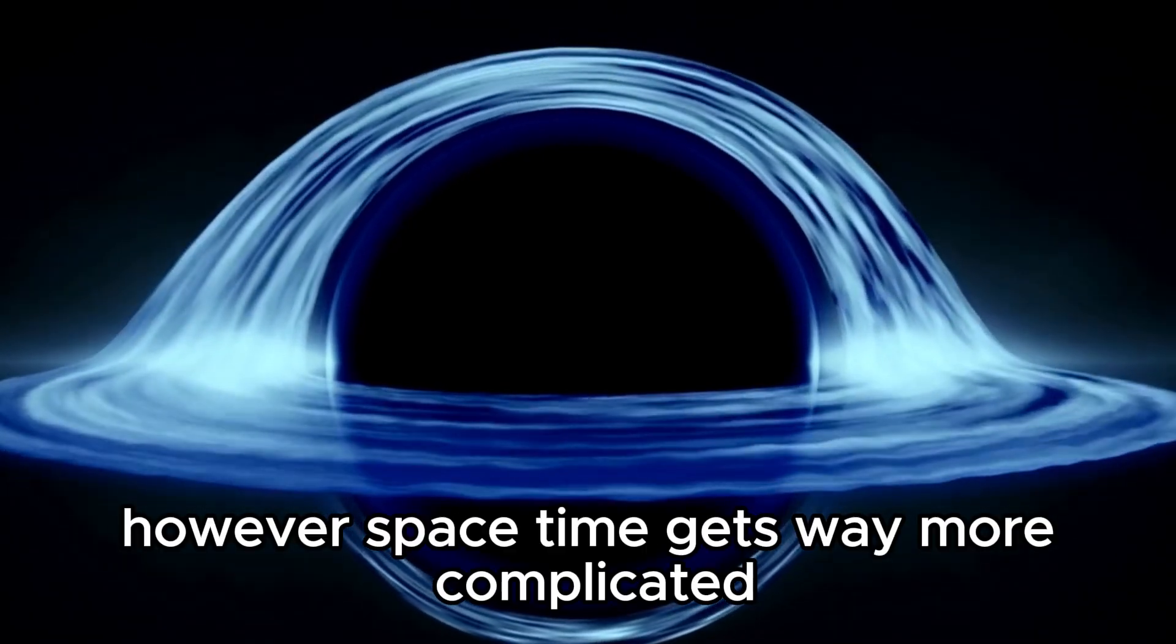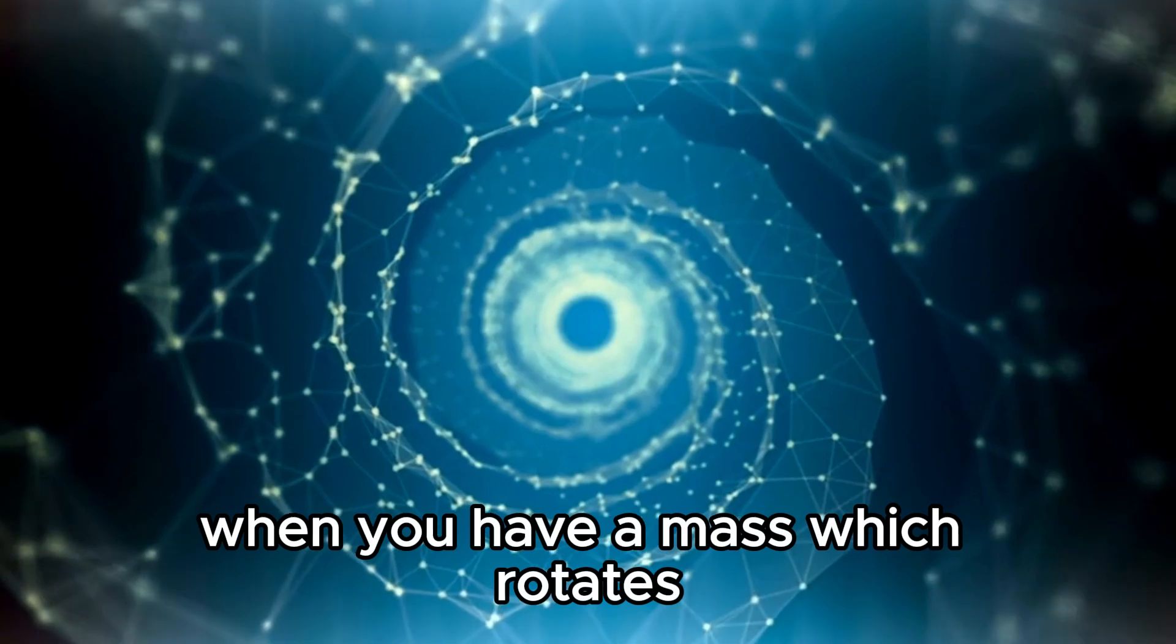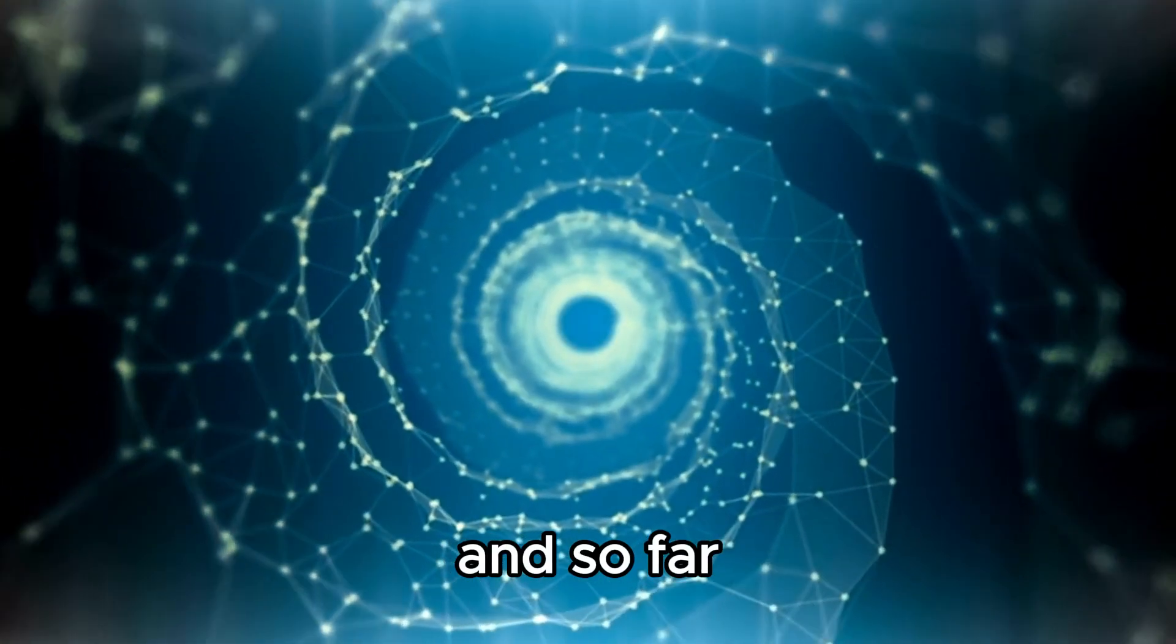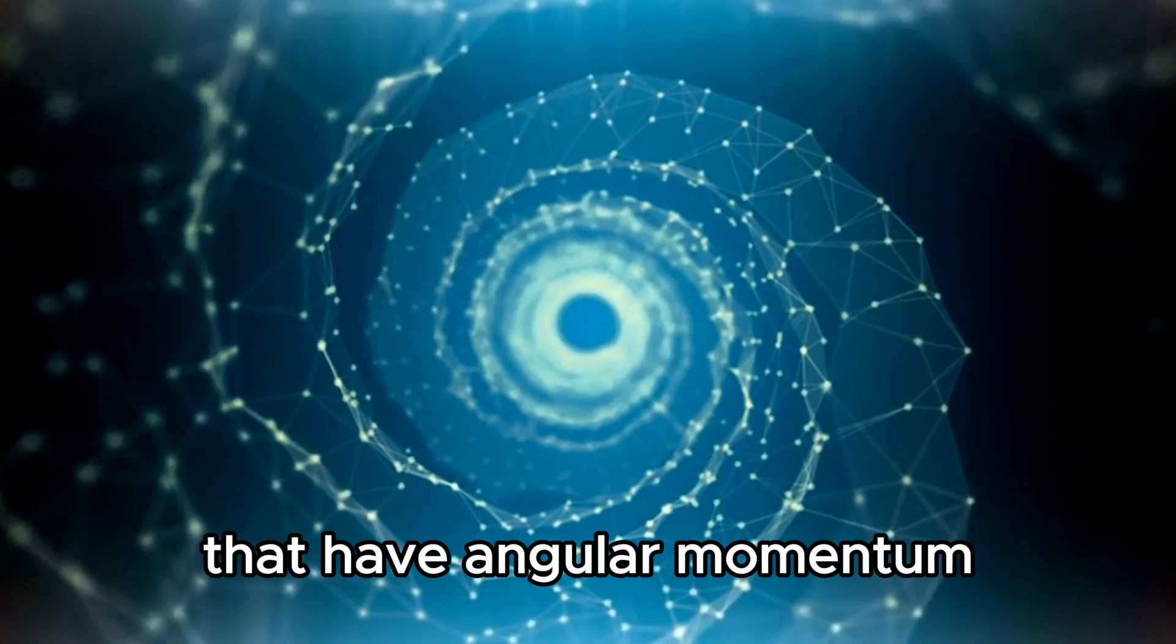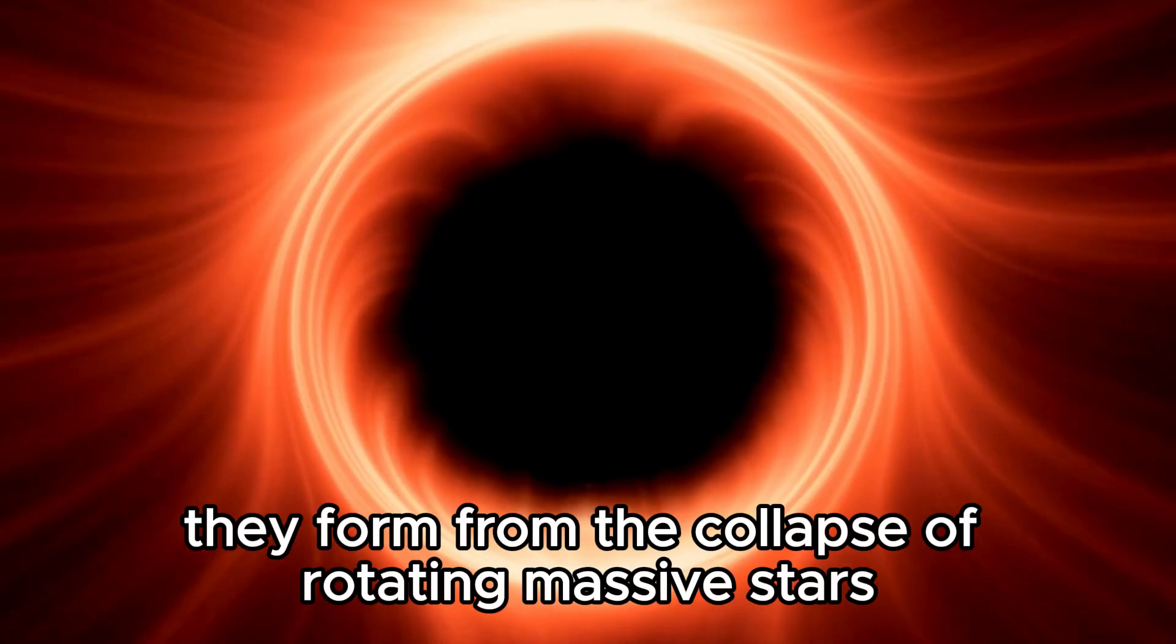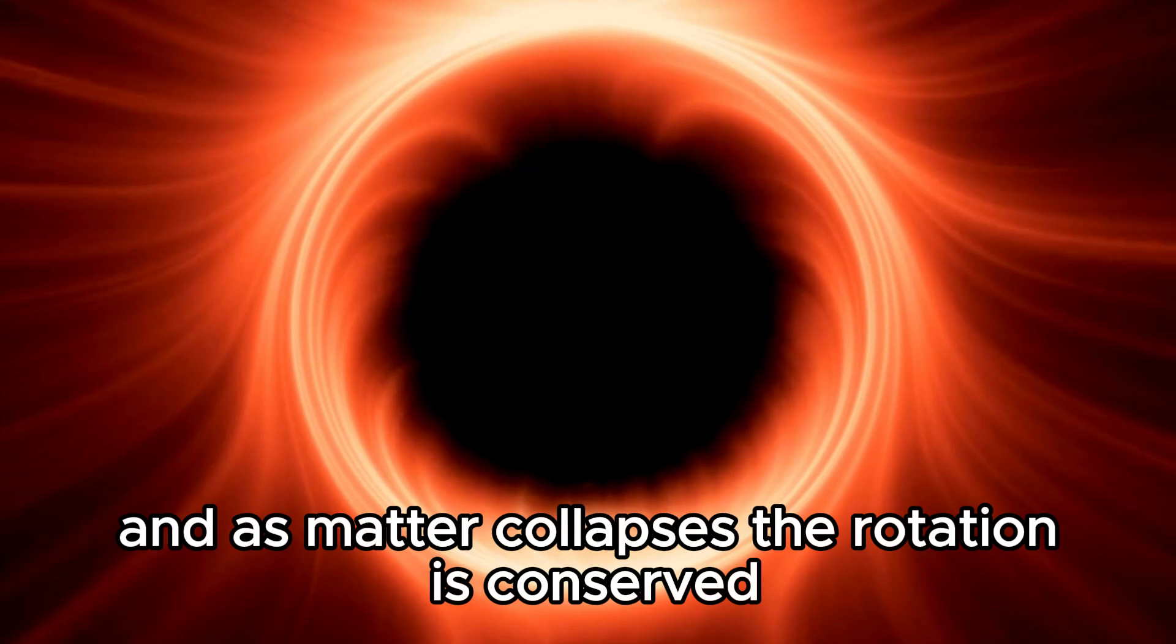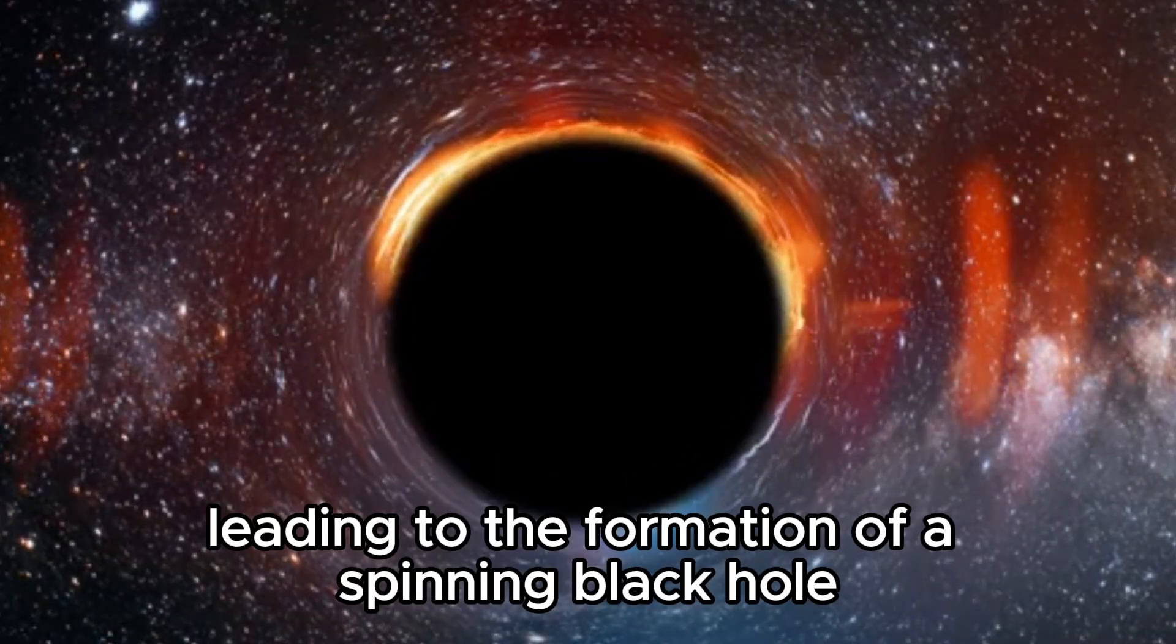However, space-time gets way more complicated when you have a mass which rotates. And so far, we only know about the existence of black holes that have angular momentum or a spin. They form from the collapse of rotating massive stars. And as matter collapses, the rotation is conserved, leading to the formation of a spinning black hole.